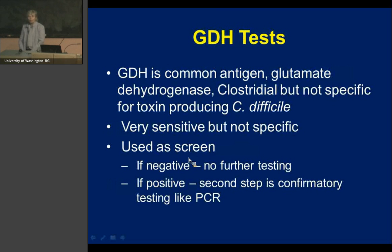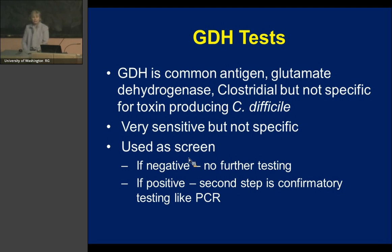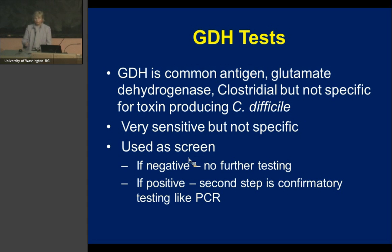GDH — glutamate dehydrogenase — is a very popular test. It is a clostridial antigen, but it is not specific for Clostridioides difficile. If it's positive, your patient might have C. diff, but might have some other Clostridium. So it is very sensitive but not specific. Some labs use it as a screen: if GDH is negative, no further testing; if positive, they perform confirmatory testing such as PCR.